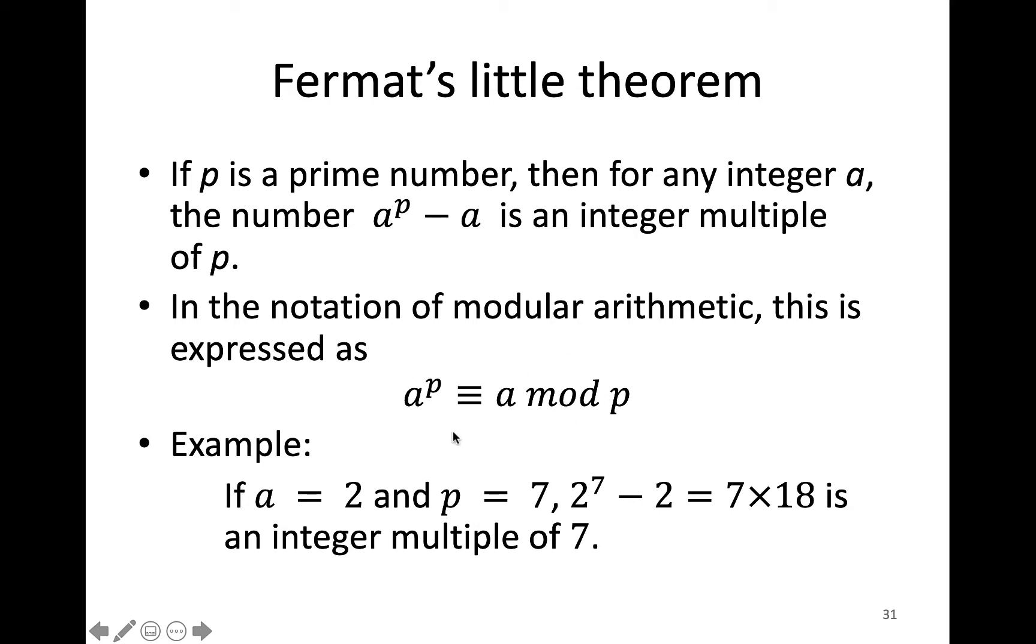You will notice that a^p - a is an integer multiple of p. For example, if a = 2 and p = 7, which is a prime number, then 2^7 - 2 = 7×18, which is an integer multiple of 7.